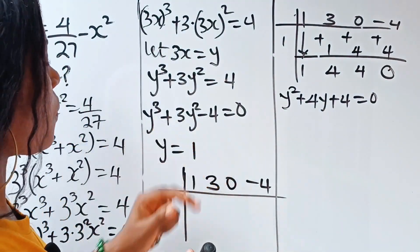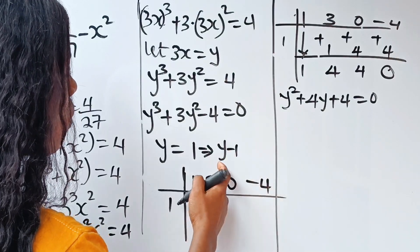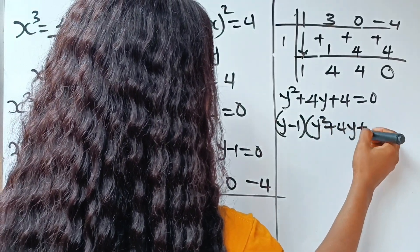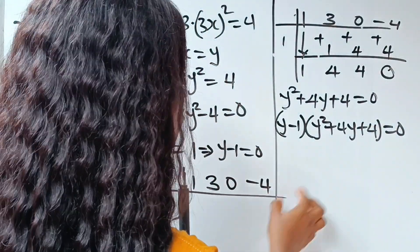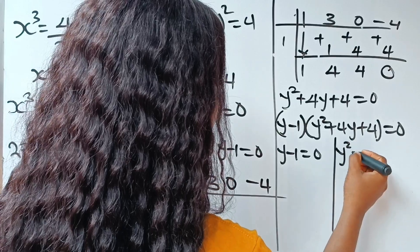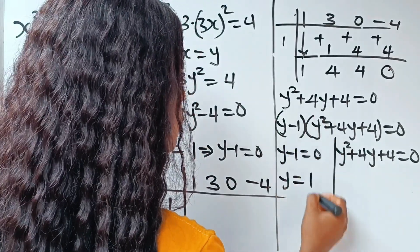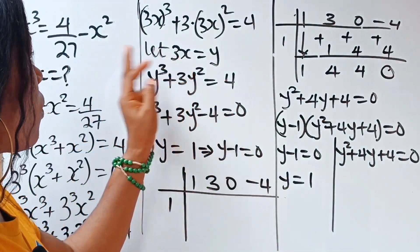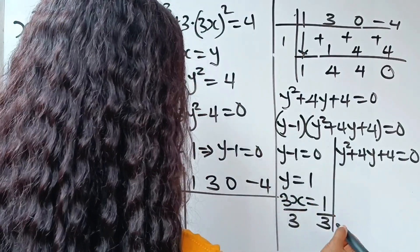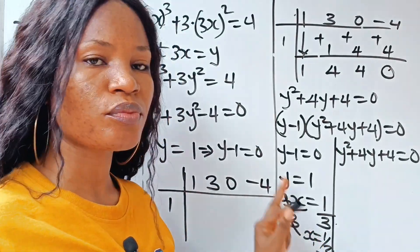Therefore the two factors of this equation are: since y equals 1, that means y minus 1 equals 0. So y minus 1 multiplied by y squared plus 4y plus 4 is equal to 0. From the first factor, y minus 1 equals 0, so y equals 1. But recall we are looking for x, and 3x equals y, so 3x equals 1. Dividing by 3, x is equal to 1 over 3. This is our first value of x.